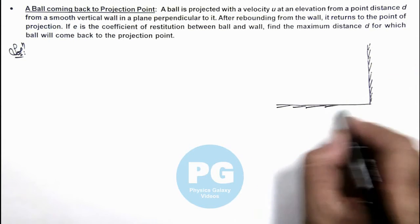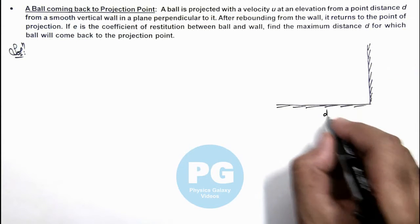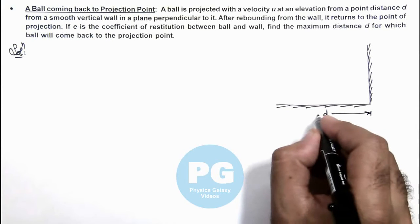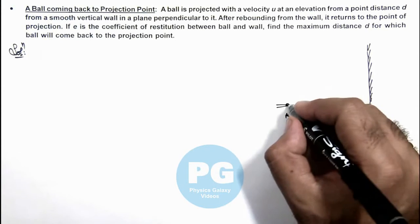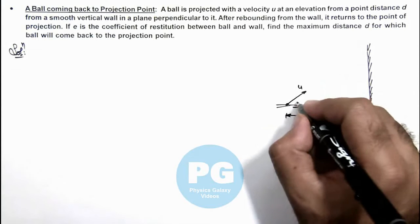And from a distance d from the wall, there is a point from which a ball is projected with a speed u at an angle alpha.